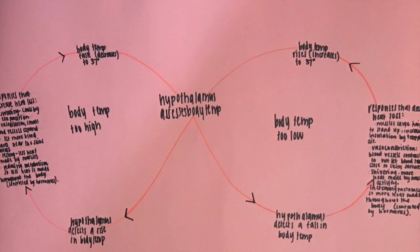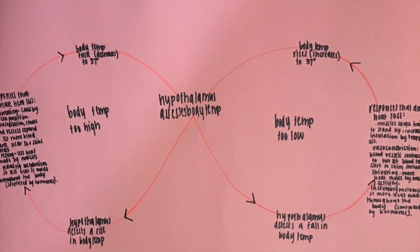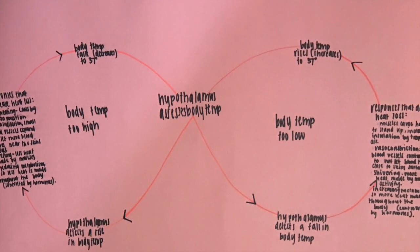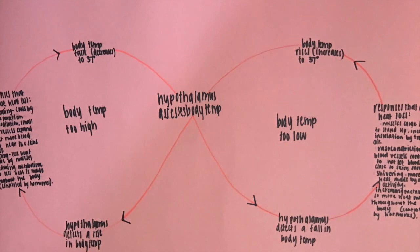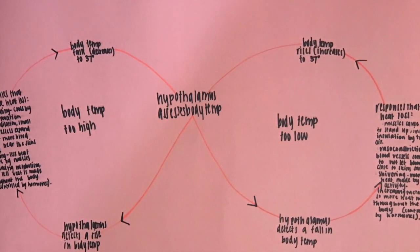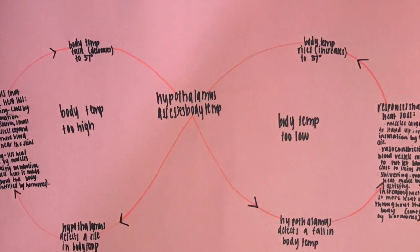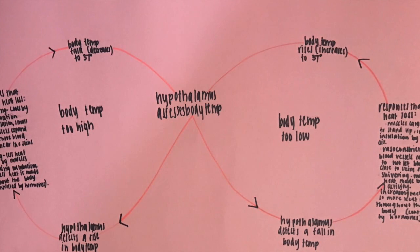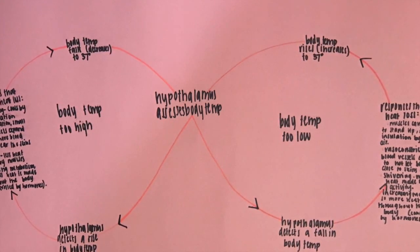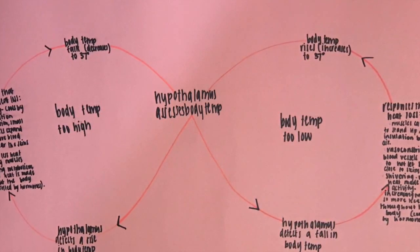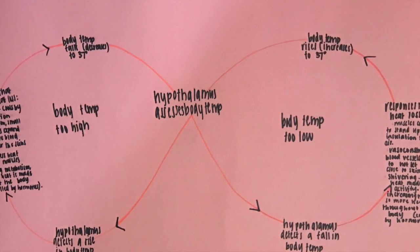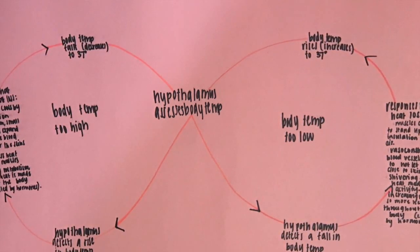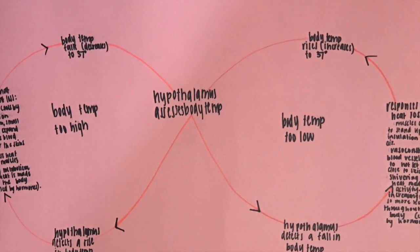The human body's optimal functioning temperature is around 37 degrees. In order for this to happen, thermoreceptors detect changes in the skin and blood temperature. Then the hypothalamus in your brain causes other changes in your skin and body to return your body temperature to optimal levels. Detecting, monitoring, and causing changes in internal temperature forms a feedback mechanism, with the hypothalamus acting as a thermostat that triggers internal changes.